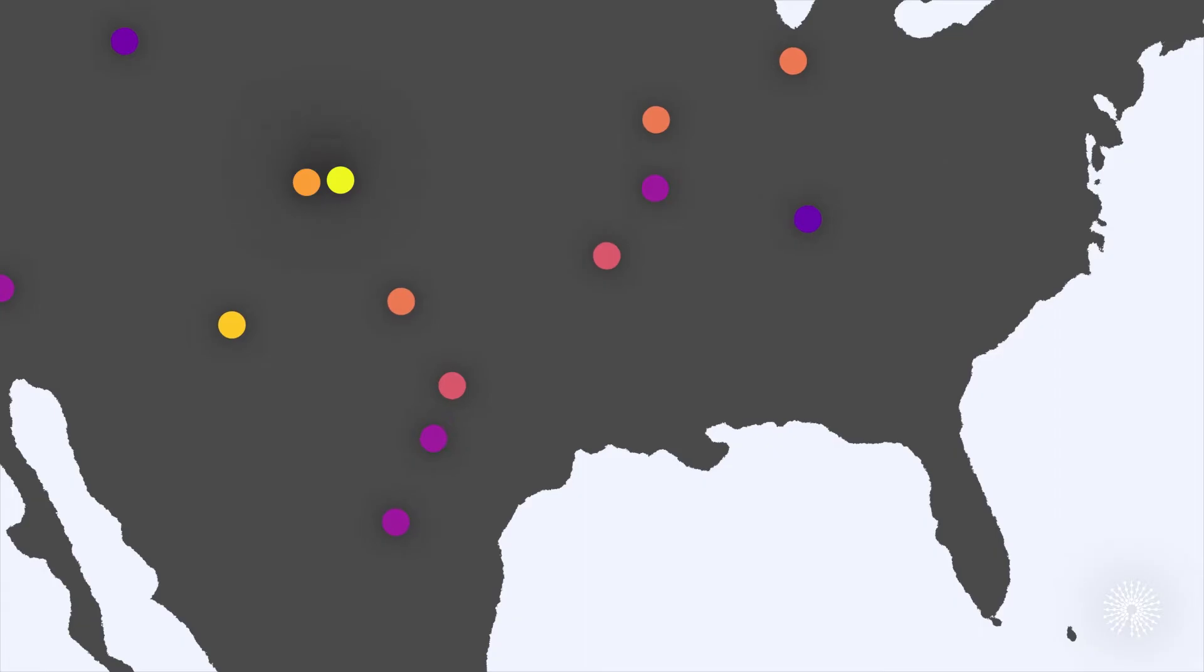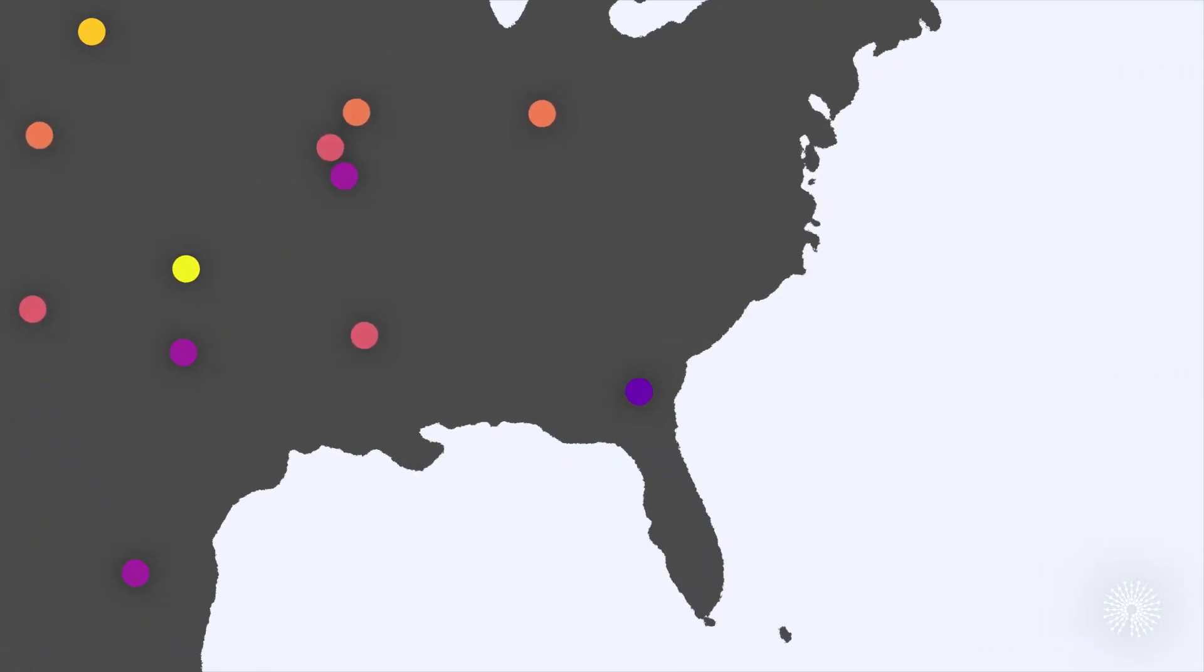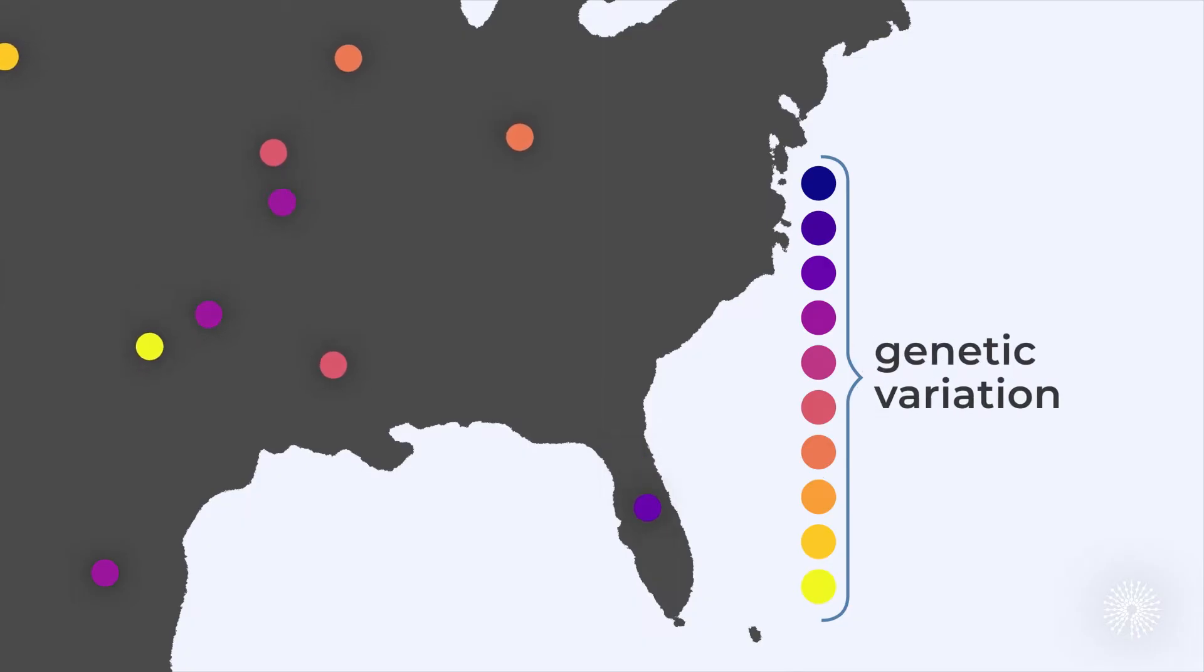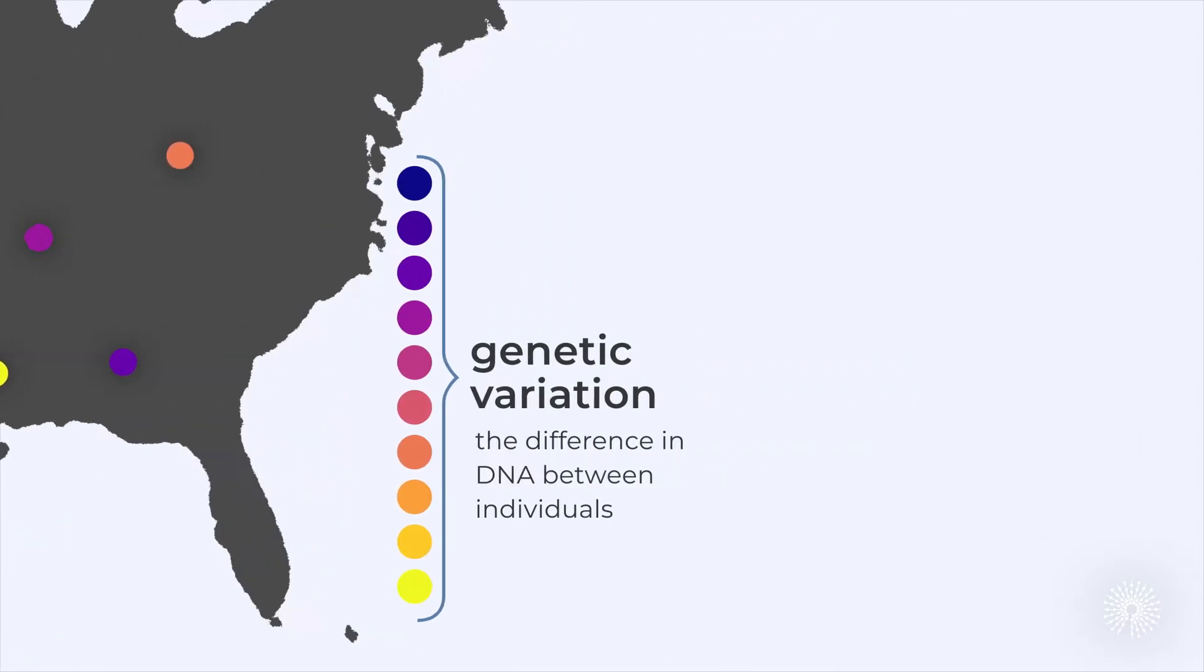Having a large, connected population means more genetic variation, that is, more DNA sequence differences between individuals shown here as the range of colors. This variation makes it much more likely that some individuals will survive any challenge, reproduce, and the population will persist.